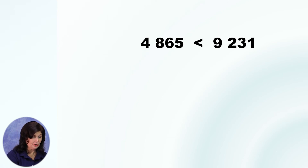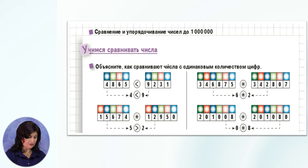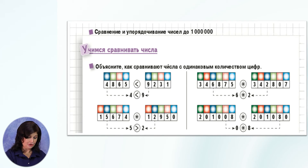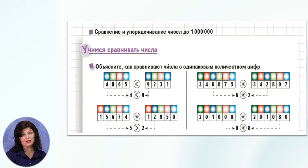Сравниваем следующие числа: 15674 и 12950. Высший разряд в обоих числах — десятки тысяч, и в одном и в другом числе одинаковы — это 10000. Сравниваем следующий разряд — единицы тысяч. В числе 15674 их 5, а в числе 12950 их 2. 5 больше 2. Значит, и всё число 15674 больше числа 12950. Мы уже знаем ответ, и сравнивать дальше эти числа не имеет смысла.